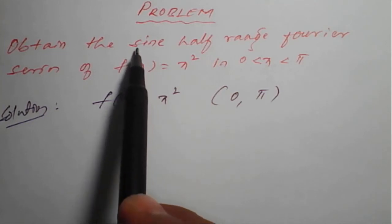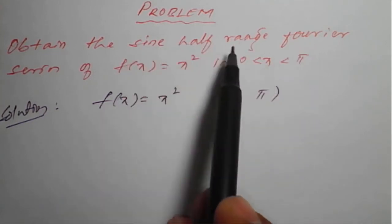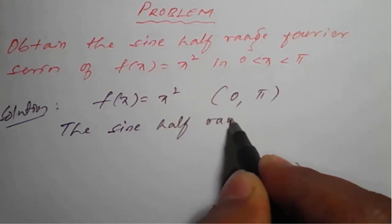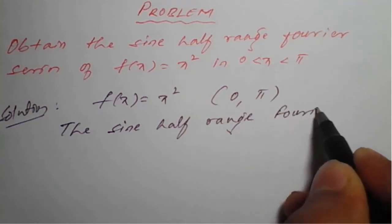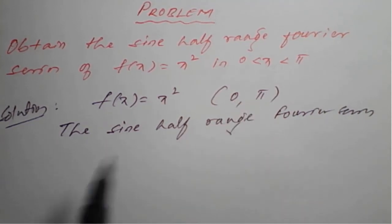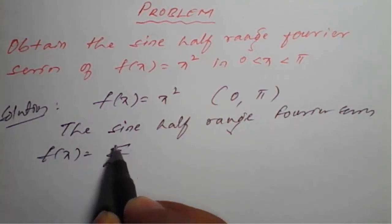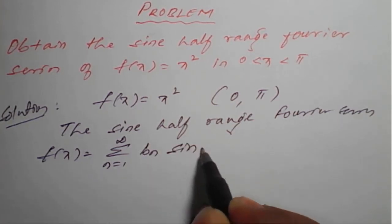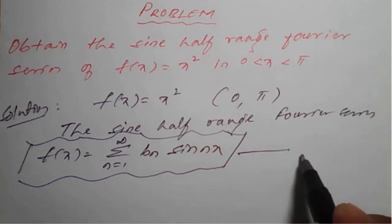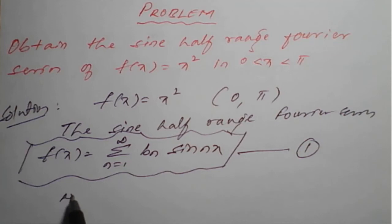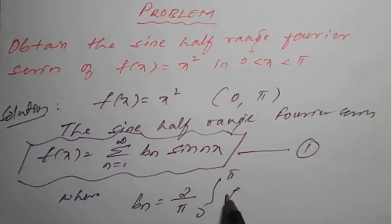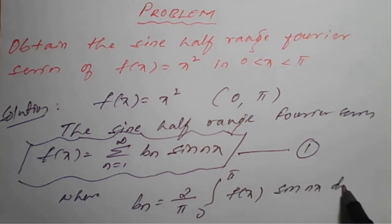We need to find the sine half range Fourier series in the interval 0 to pi. The sine half range Fourier series is given by f(x) = summation from n=1 to infinity of b_n times sine(nx). This is the sine half range Fourier series of period 0 to pi — call this equation number one.